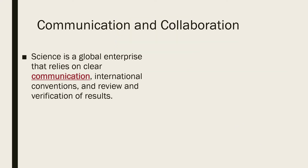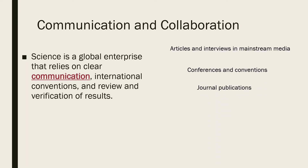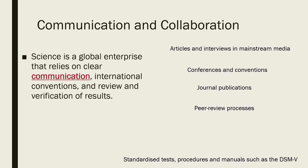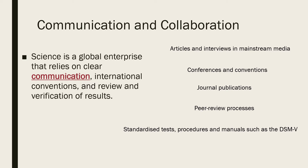The first elaboration under the communication and collaboration key concept is the idea that science is a global enterprise that relies on clear communication, international conventions and review and verification of results. Scientists communicate their findings in a variety of ways, from interviews and articles in mainstream media to conference presentations and journal publications. Journal articles are peer reviewed, meaning the author's scholarly work, research or ideas are subjected to the scrutiny of others who are experts in the same field — their peers. Psychology also involves the use of international conventions, such as standardised tests, data collection techniques and the Diagnostic and Statistical Manual of Mental Disorders, which is a product of years of effort from hundreds of international experts in all aspects of mental health.